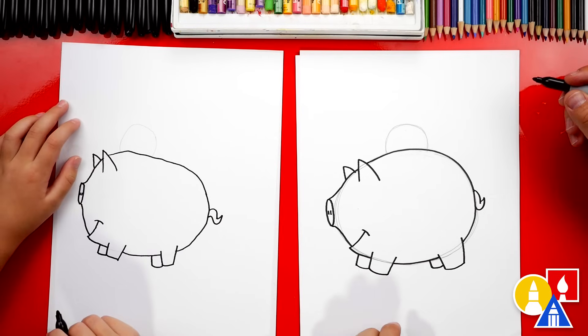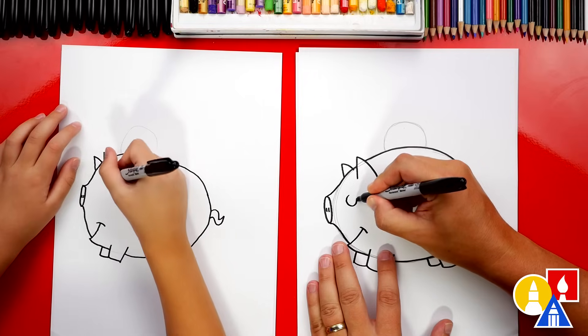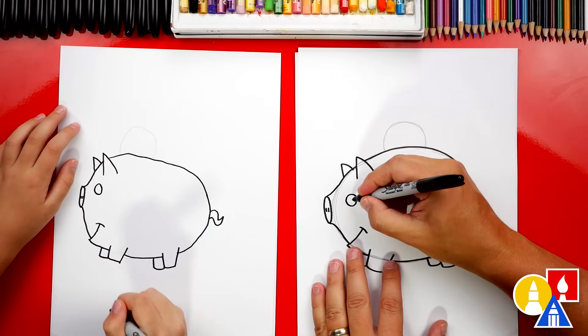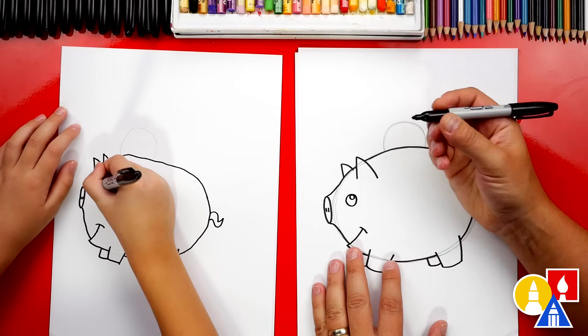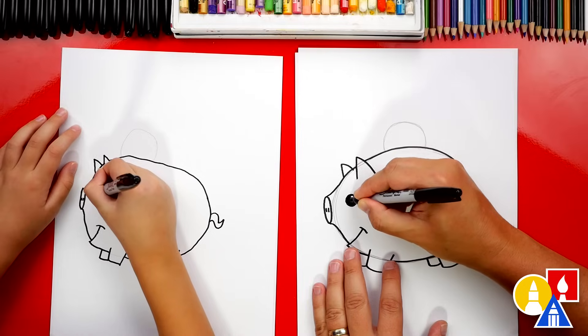Oh, what did we forget? The eyes. Yeah, we forgot the eyes. Let's just draw one since it's this side of our little piggy bank. Draw a circle. You can also draw a smaller circle inside for the highlight and color in the big circle.